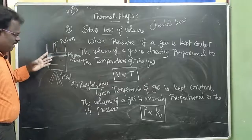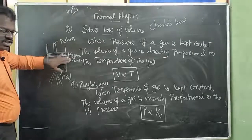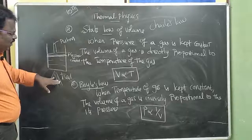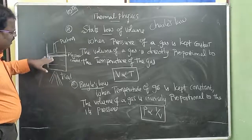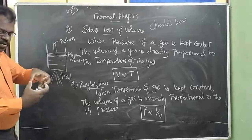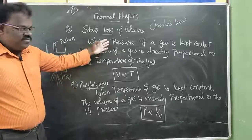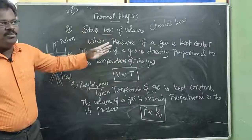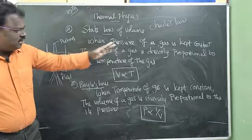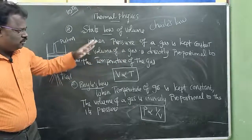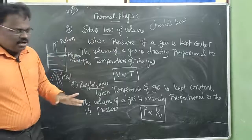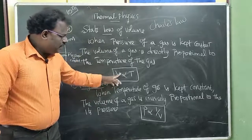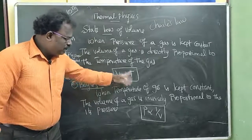When the pressure is concerned, the temperature will rise. When the pressure is concerned, the volume will rise. When pressure of a gas is kept constant, the volume of the gas is directly proportional to the temperature of the gas. Volume of the gas V is directly proportional to the temperature.